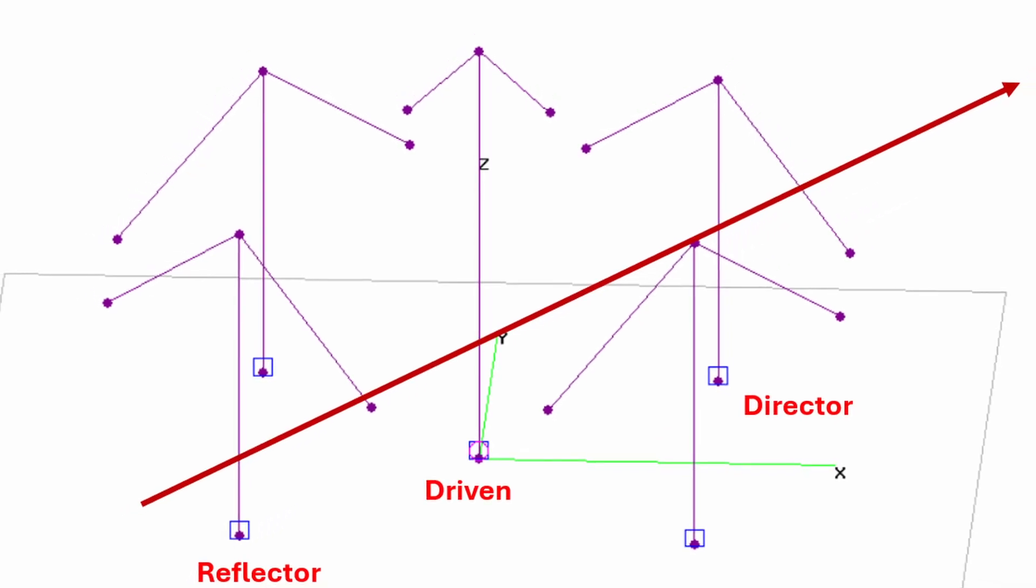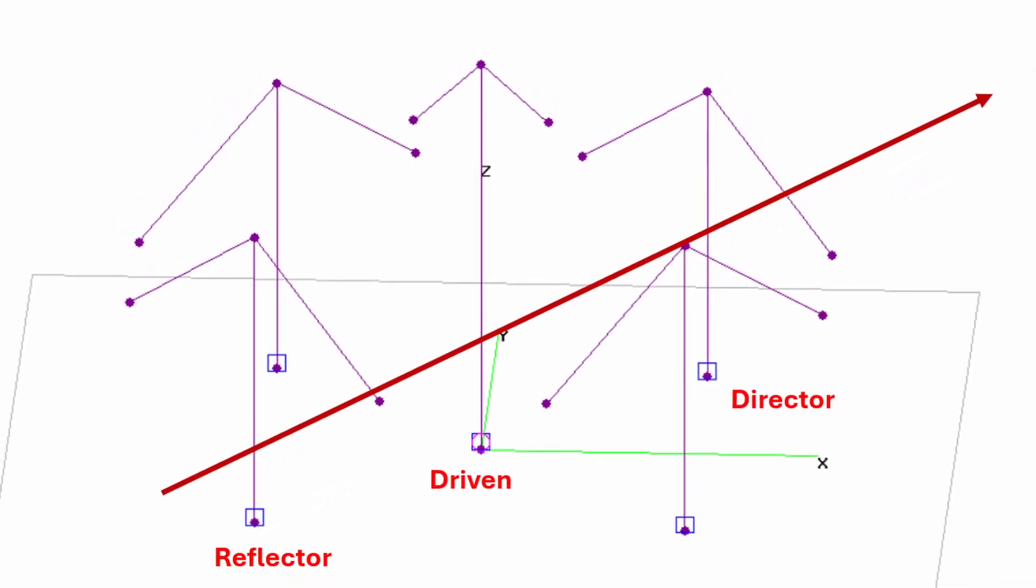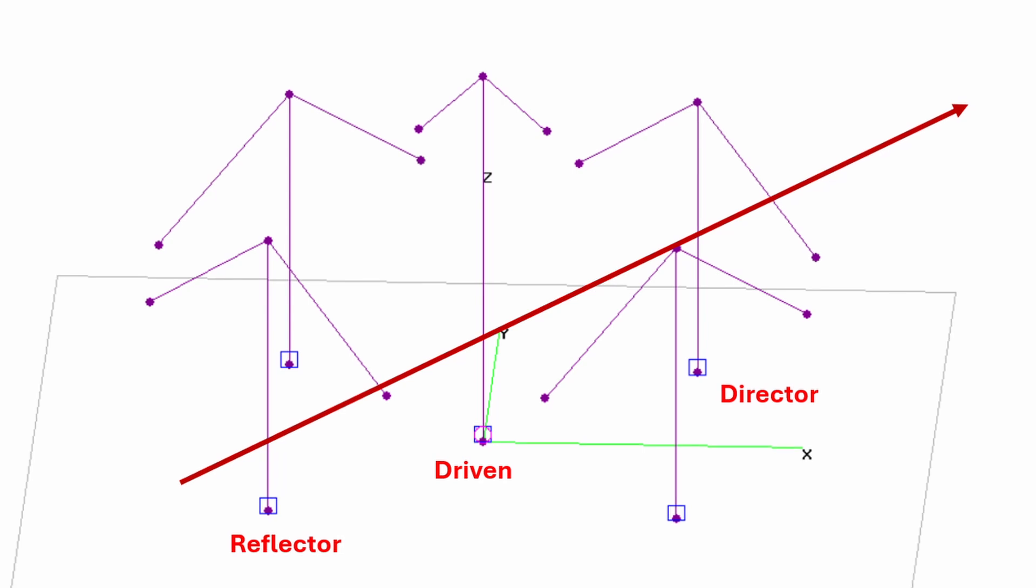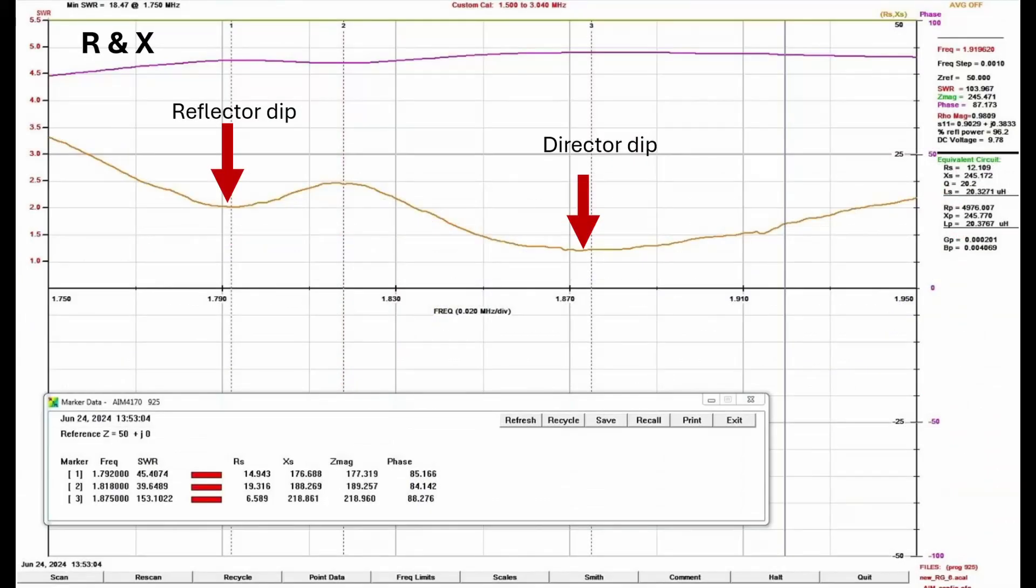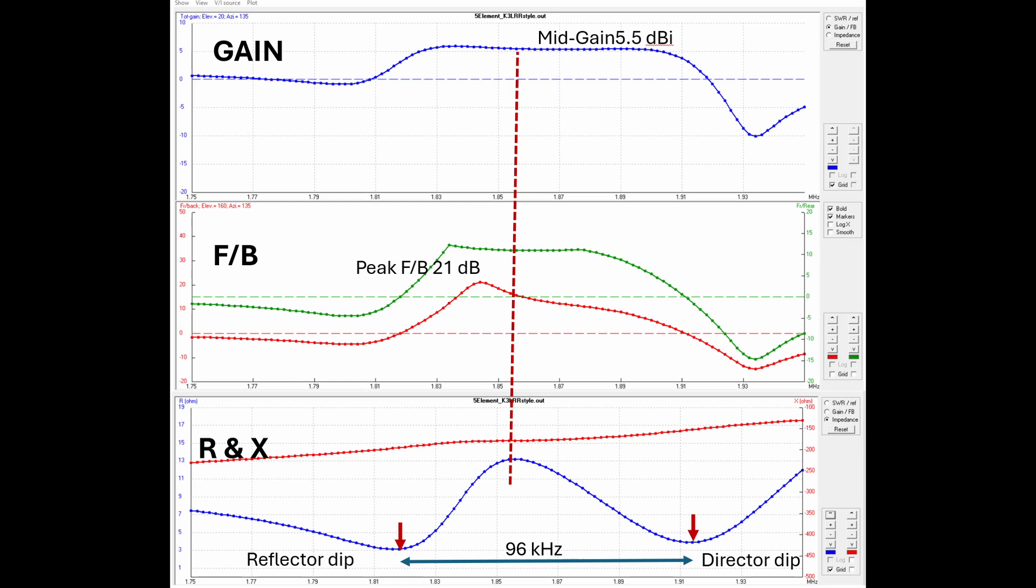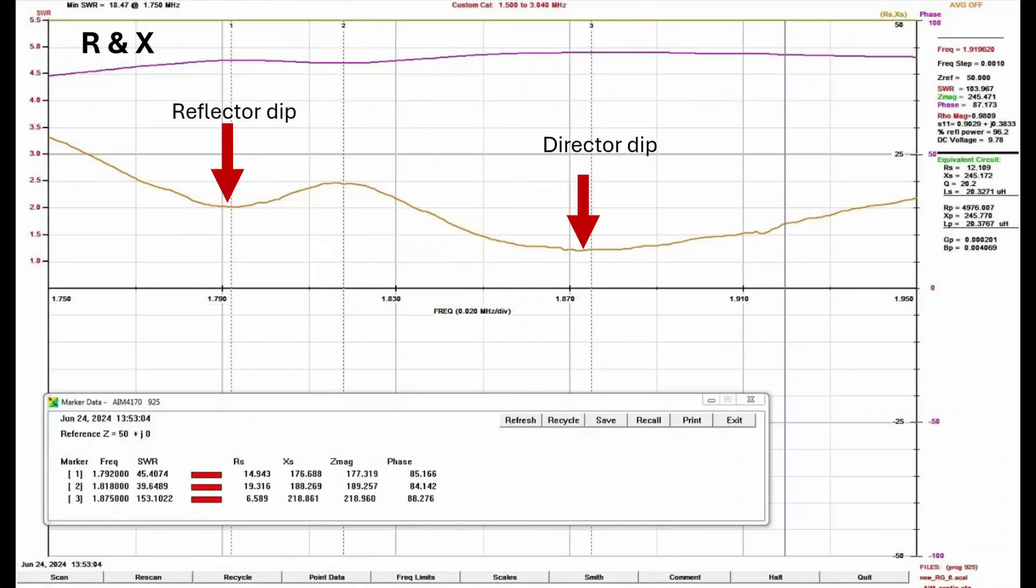All right, now if we have a 3-element parasitic antenna, a reflector-driven-director model like the K3LR style, then we're going to see two real resistance dips, one for the reflector and one for the director. This is a field sweep from my 3-element 160-meter array. Now here are those same impedance and gain sweeps from our 4NEC2 three-element model. Notice the mid-gain point is near the middle of these two R dips, so in the field we'll tune the driver around here for maximum gain.